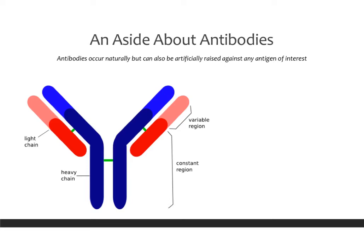Antibodies are things you've probably heard of as protecting your body from pathogens or viruses. That is true — they do occur naturally — but we've also found ways to use them in the lab. We can now raise antibodies against any antigen of interest, meaning that if there's a protein or structure in the cell we want to study, we can artificially produce antibodies highly specific to that structure. Antibodies are composed of two major chains: the heavy chain, which is longer, and the light chain, which is smaller and on the outside.